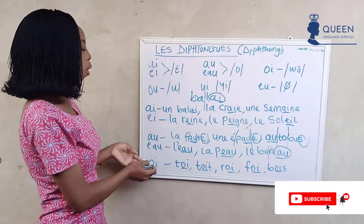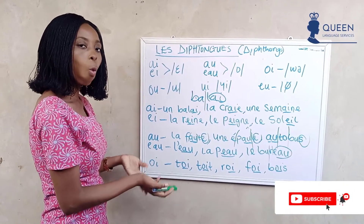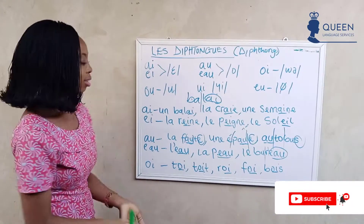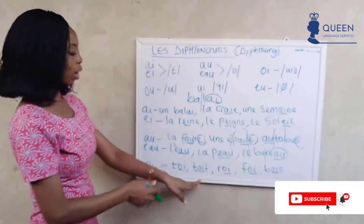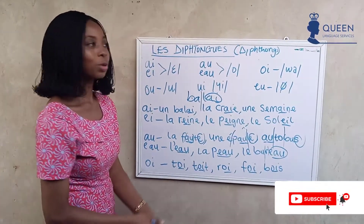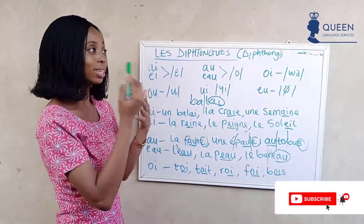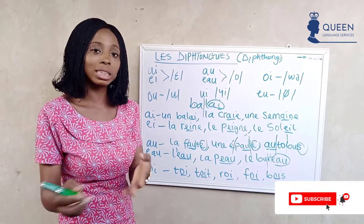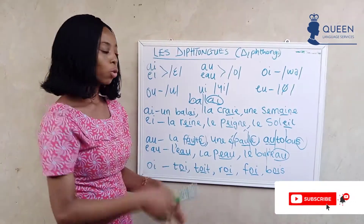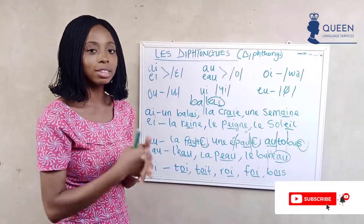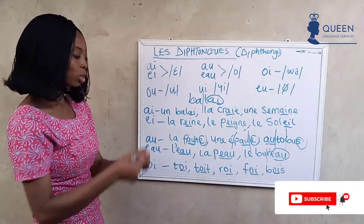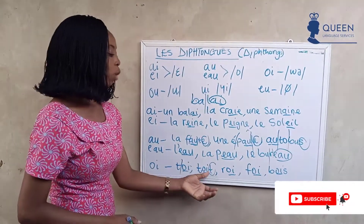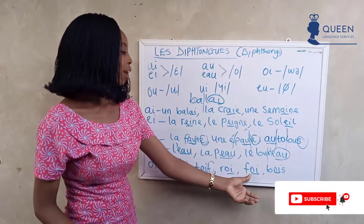Now we have 'oi', which in French gives the sound 'wa'. We have words like 'moi', 'toi', and 'roi', meaning 'king'. Be careful with 'toit' — in context it can refer to the roof of a house, or 'toi' referring to the second person singular 'you'. We also have 'le bois', meaning 'wood'.